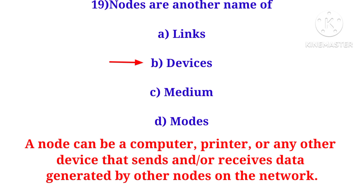Notes — another name for nodes. A node can be a computer, printer, or any other device that sends or receives data generated by another node on the network. Devices such as computers, printers, and scanners transmit and receive signals as nodes.